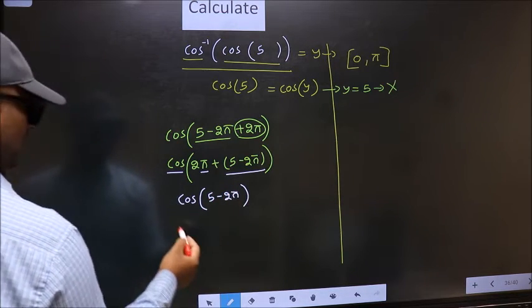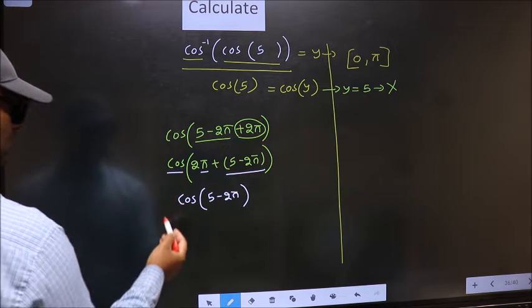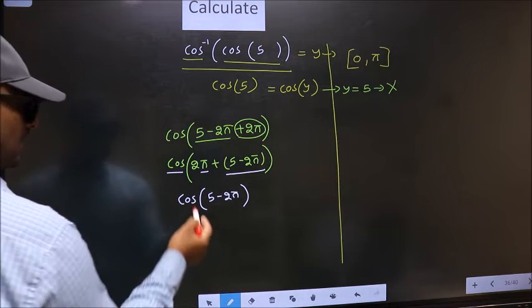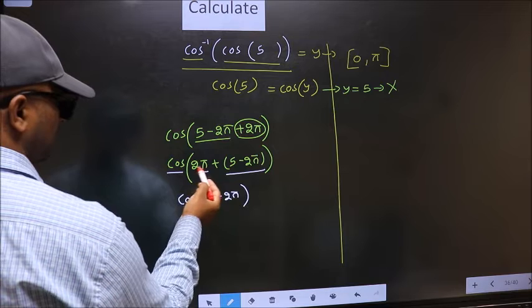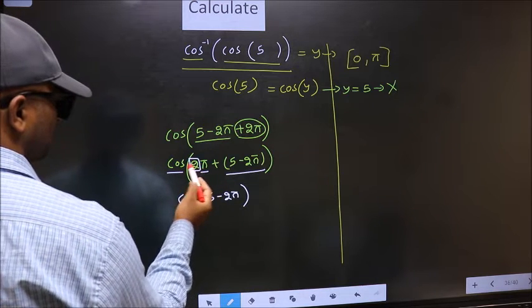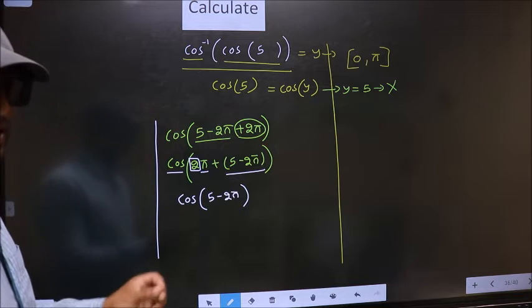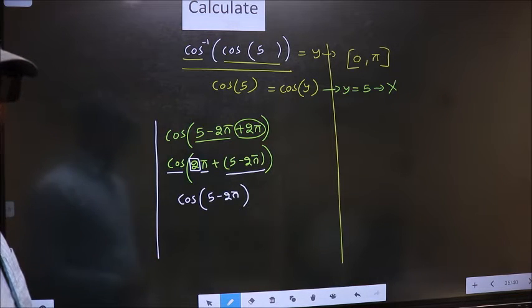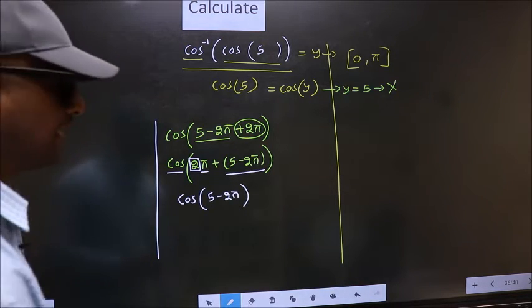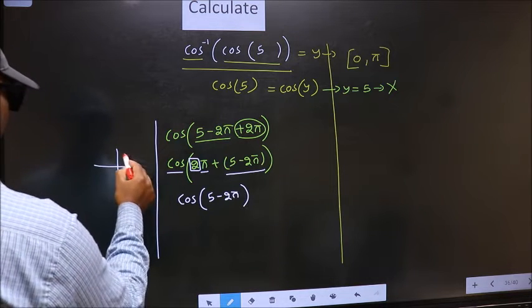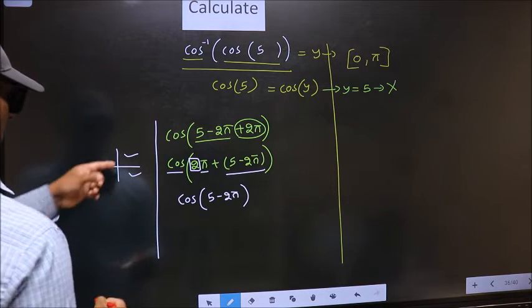Now the question is will we get here plus or minus? To answer that we should look at the number before pi which is 2. And 2 is even.